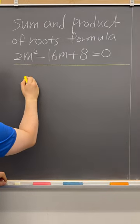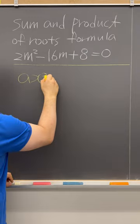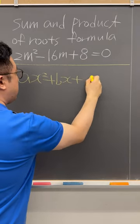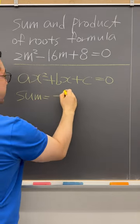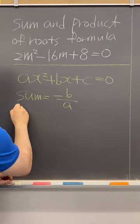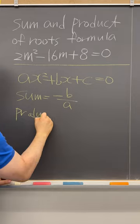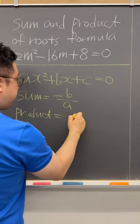So let me write this standard form of quadratic equation. Then the sum of the roots is going to be negative b over a, and the product of the roots is going to be c over a.